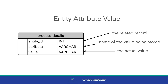The second column is called Attribute, which is the name of the value being stored. This could be colour preference or phone number for a customer, or perhaps size or voltage for a product. The third column is called Value, which is the actual value that is stored for the attribute — for example, the value of green, or large, or 240 volts.